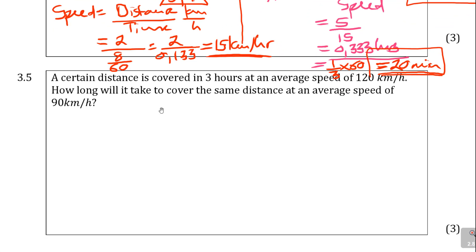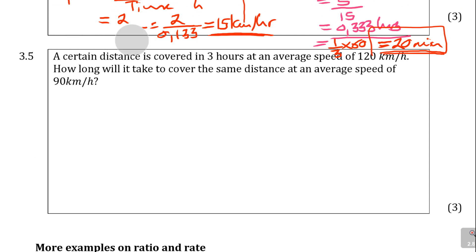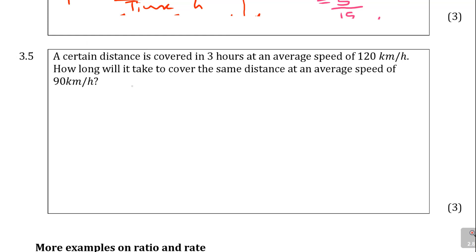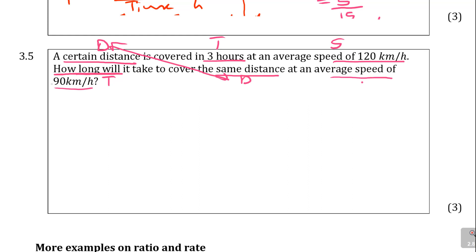Next is question 3.6. It says: a certain distance is covered in 3 hours at an average speed of 120 km/h. How long will it take to cover the same distance at a different speed? The distance D is unknown, time is 3 hours, and the speed is 120 km/h. The second part asks for time T to cover that same distance D at a new speed.